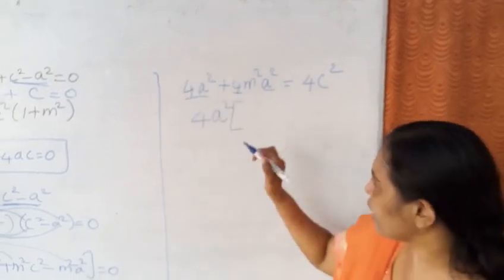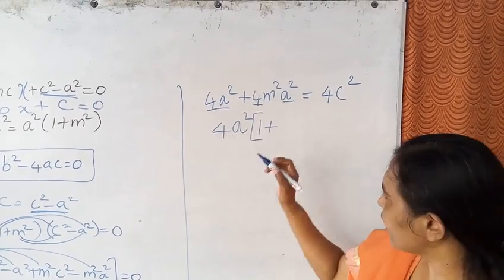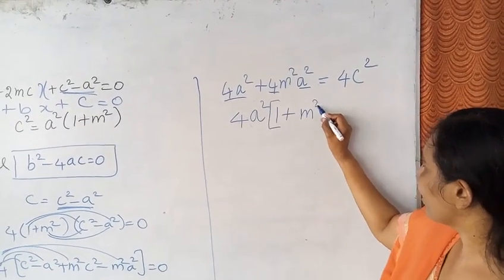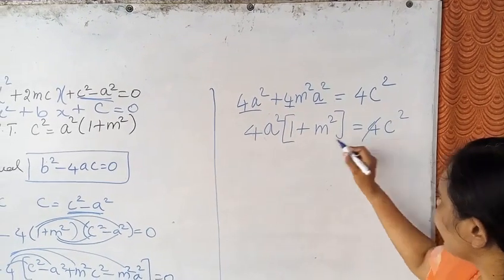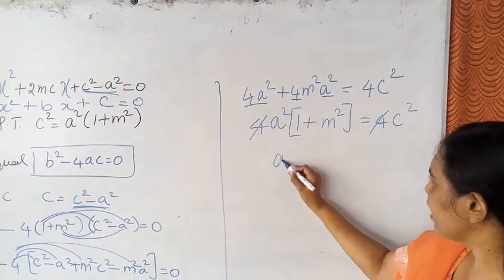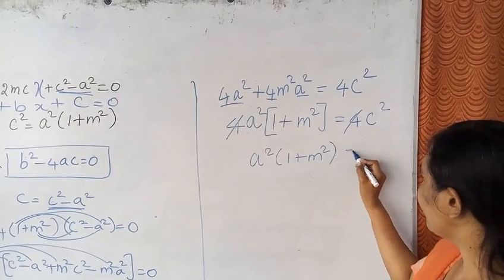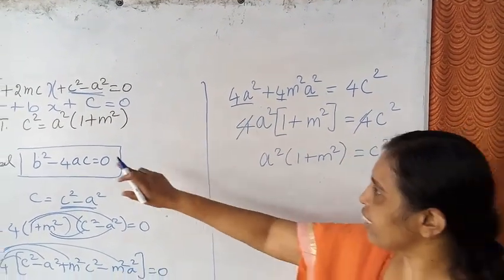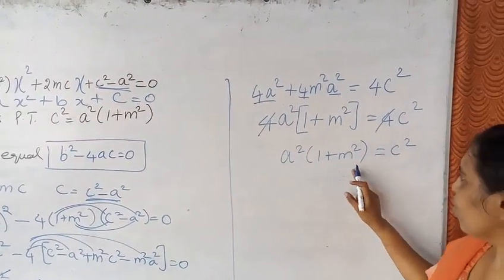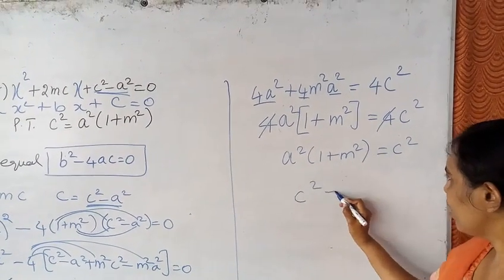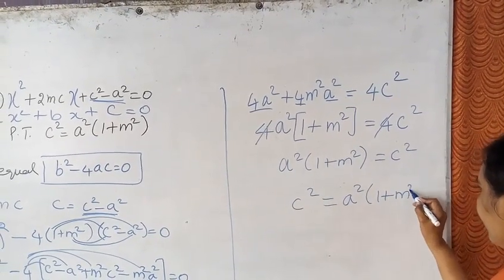4a square into 1 plus m square equal to 4c square. Cancel 4. We get a square bracket 1 plus m square equal to c square. C square equal to a square into 1 plus m square.